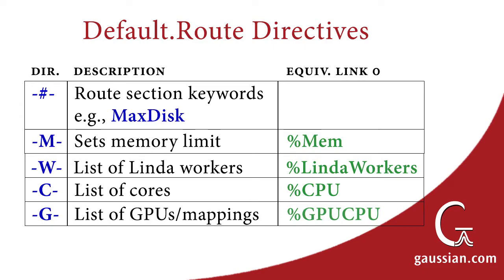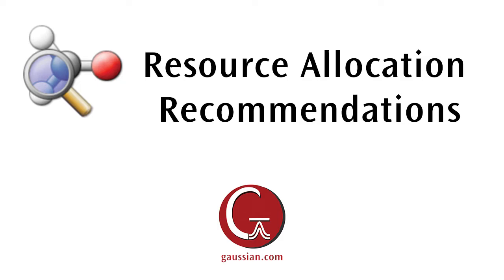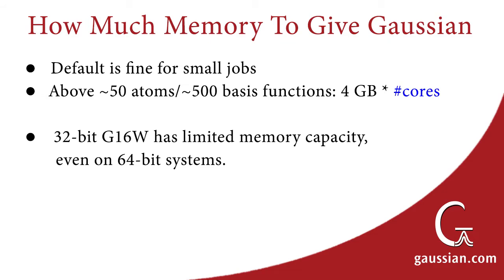We conclude this video with some general recommendations about allocating resources to Gaussian. The size of the job determines the amount of memory Gaussian will need. For smaller jobs, the default amount will work fine. For jobs on molecules of 50-plus atoms and around 500 basis functions, give Gaussian 4 GB of memory per core. However, be sure not to allocate so much memory that the overall system is starved, as this will degrade all performance, including Gaussian's.